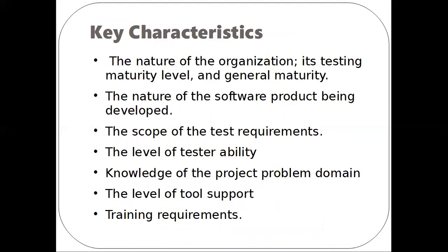The next component is key characteristics of the testing organization. The first is the nature of the organization: its testing maturity level, types of testing carried out, and types of testing tools needed. The second is the nature of the software product being developed — whether it is a real-time system, embedded system, optical system, or business application system. The next is the scope of the test requirements, which defines non-functional requirements such as performance, availability, and usability. Next is the level of test ability, based on education, training, and experience level, which impacts the team's ability to contribute to the project and support the organization.